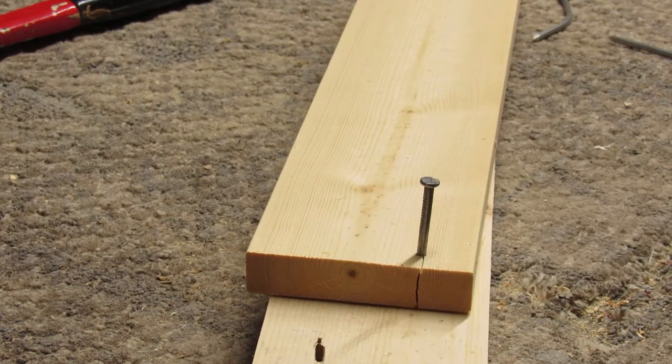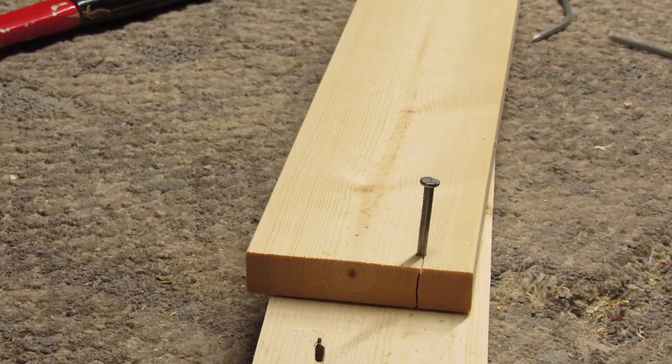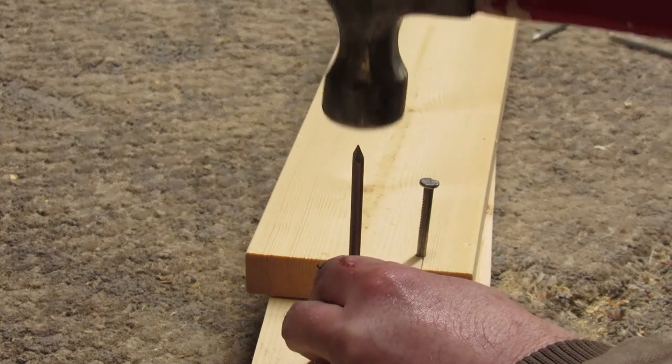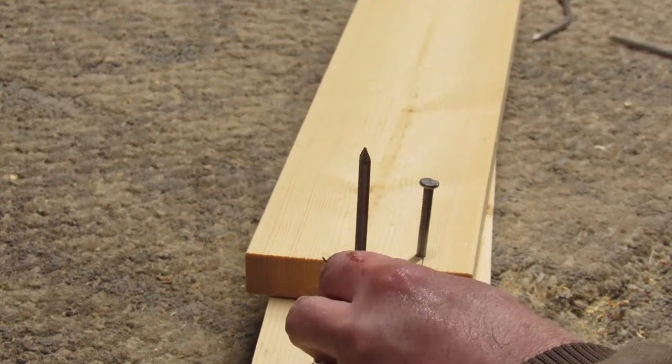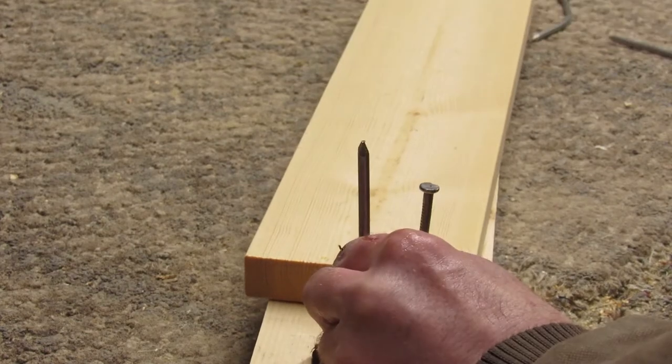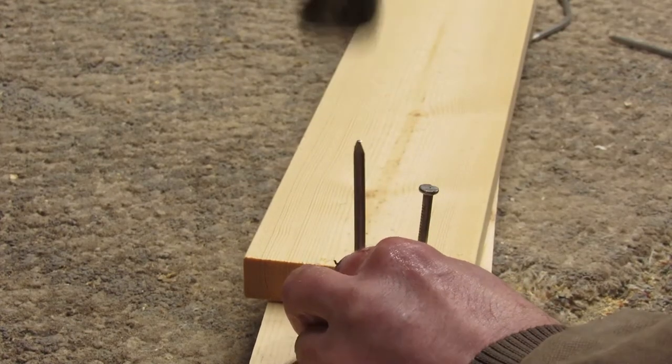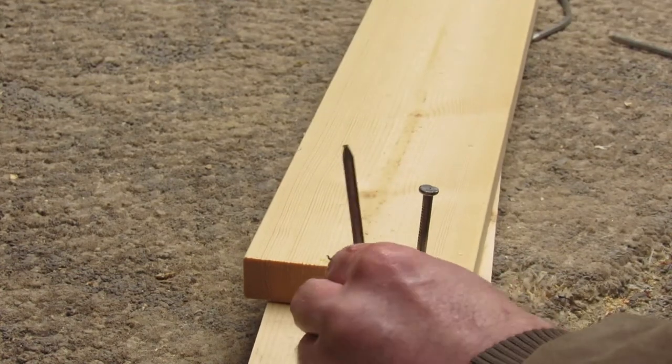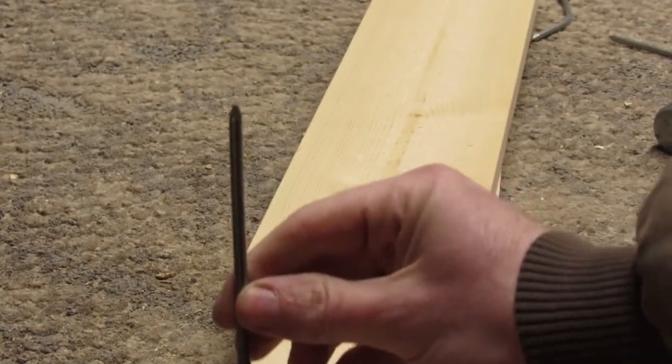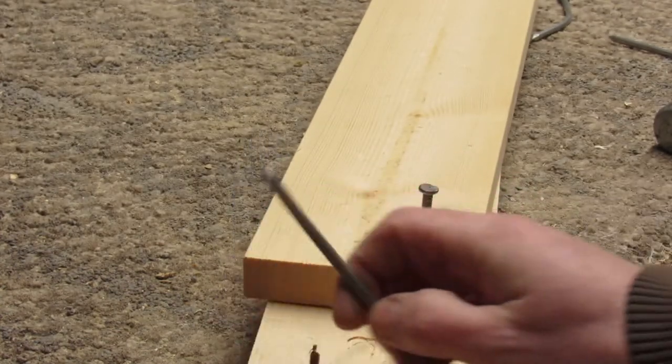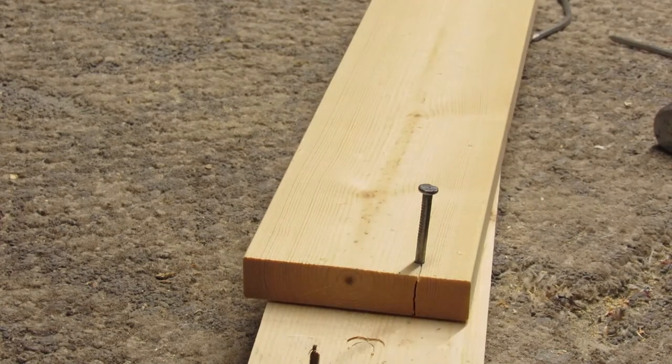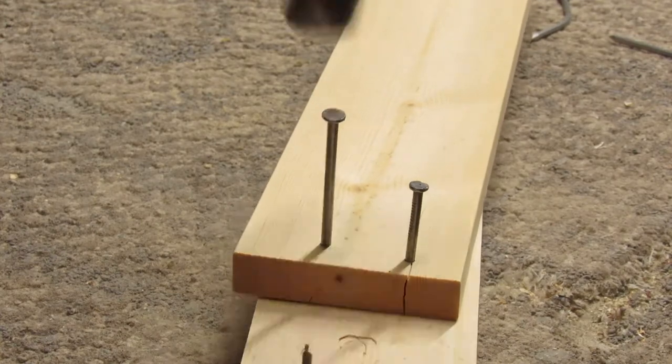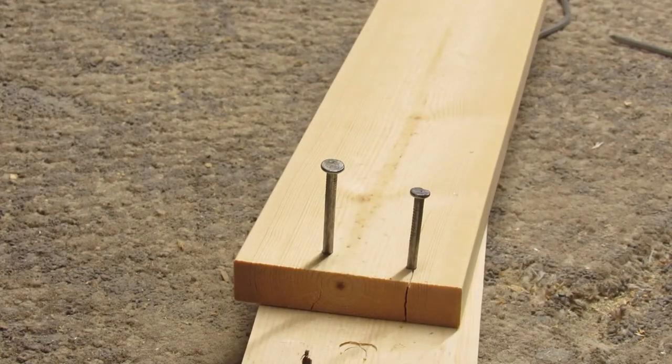That split the board, so what we're gonna try now is to actually make the end of our nail more blunt. That's what you don't want to do. Okay, so now I've made the end of the nail kind of blunt and now we're going to see if we can drive it through without it splitting the board. Let's go a little farther and see.